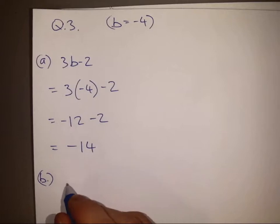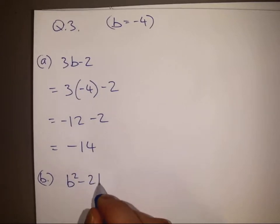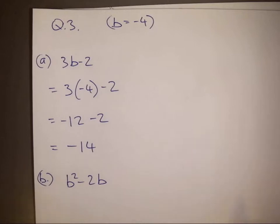Part b, we are told that this is our expression, b squared minus 2b, b still equals minus 4.